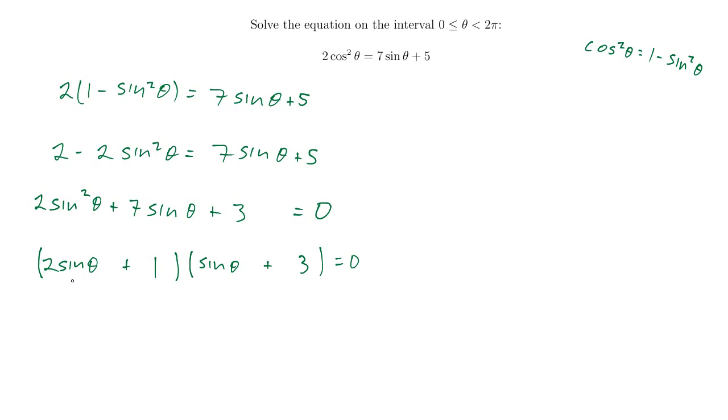Now let's just check that that works. 2 sine theta times sine theta is 2 sine squared theta. 1 times 3 is the 3. And then 2 sine theta times 3 is 6 sine theta, plus another 1 times sine theta makes 7 sine theta. Alright, and now we can break this up into two equations. We now have that 2 sine theta plus 1 equals 0, or sine theta plus 3 equals 0.